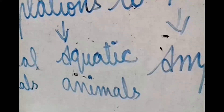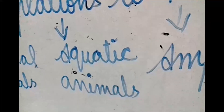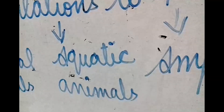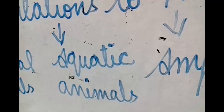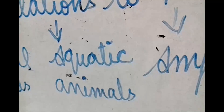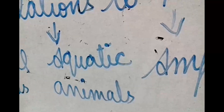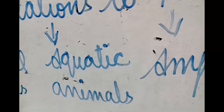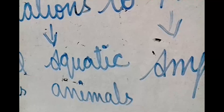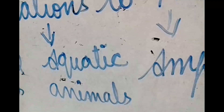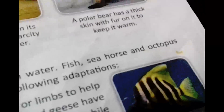Now we will see the next group: aquatic animals. Aquatic animals are the animals which live in water — 'aqua' means water. Examples include fish, sea horse, and octopus. Here you can see a picture of fish.